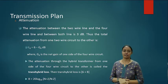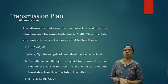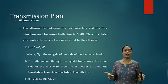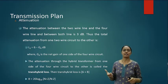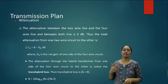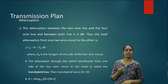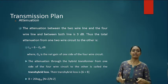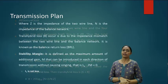The attenuation through the hybrid transformer from one side of the four-wire circuit to the other is called trans-hybrid loss, measured as (6 + P) dB, where 6 is the ideal value in decibels and P represents the trans-hybrid loss or bandwidth factor. This is the attenuation factor applicable in telephonic networks.